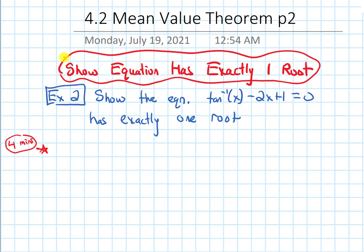In this video, we will do an example in which we show an equation has exactly one root. The problem says: show the equation arctan(x) minus 2x plus 1 equals 0 has exactly one x value that's going to make this function on the left-hand side equal to zero.